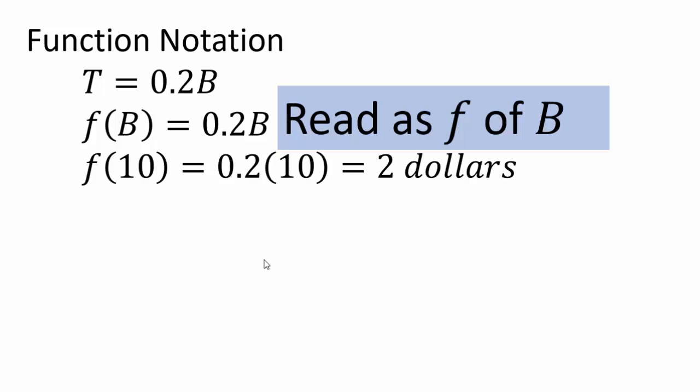So F of 10 will be 0.2 times 10 or $2. You can see why B is 10. What that means is that your meal costs $10 and you would pay $2 tip. That would be 20% tip. So F of 10 is $2.